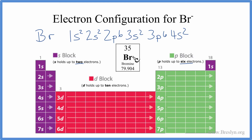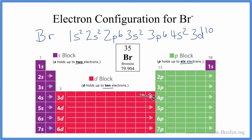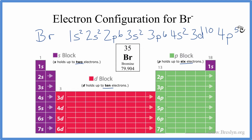We have 35 electrons total. After 4s, we go to 3d. D orbitals can hold up to 10, so we'll put 3d¹⁰ here, giving us 30 electrons used. From 3d¹⁰, we go to 4p, and remember p's hold up to 6, but we don't need 6 — we need a total of 35. So we have 30, and we'll just put 5 in that 4p orbital. This is the electron configuration for bromine, the neutral element.